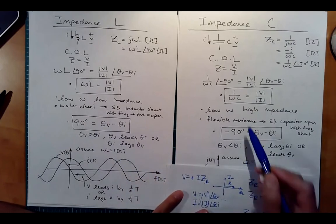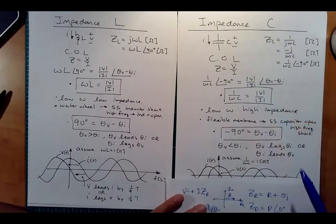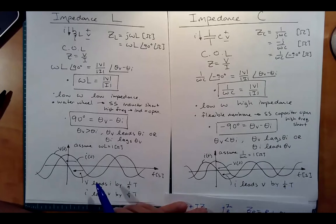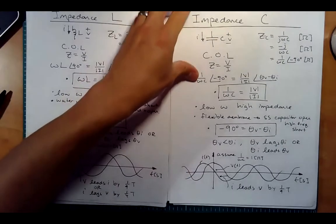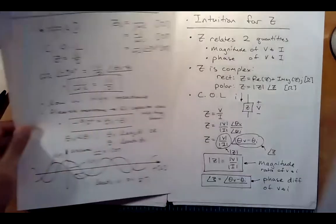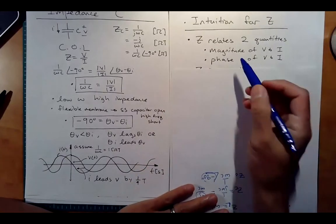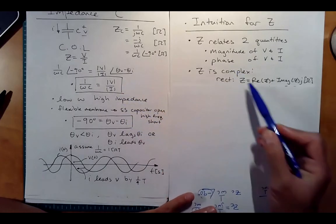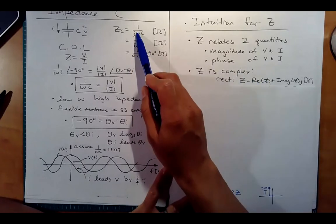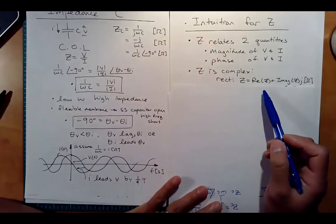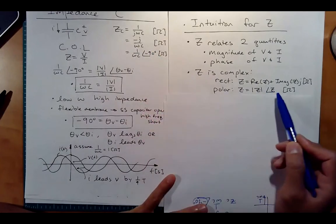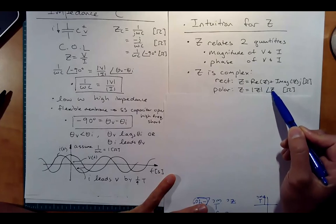To summarize: Z relates two quantities — the magnitude of V and I, and the phase of V and I. Z is complex: it has either rectangular form with real and imaginary parts, or polar form with magnitude and phase. For a resistor there's only a real part; for inductors and capacitors there's only an imaginary part; a combination can have both. The angle of Z, theta_Z, equals theta_V minus theta_I.